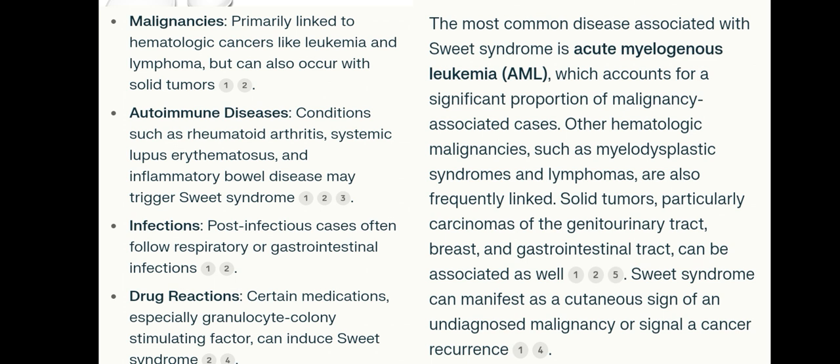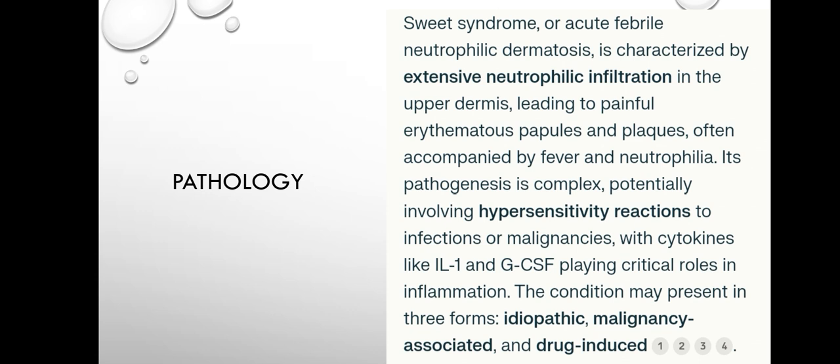The most common disease associated with Sweet Syndrome is acute myelogenous leukemia, which accounts for a specific proportion of malignancy-associated cases. Other hematological malignancies such as myelodysplastic syndrome and lymphomas are also frequently linked. Solid tumors, particularly carcinoma of the genitourinary tract, breast, and gastrointestinal tract, can be associated as well. Sweet Syndrome can manifest as a cutaneous sign of undiagnosed malignancy or signal a cancer recurrence.